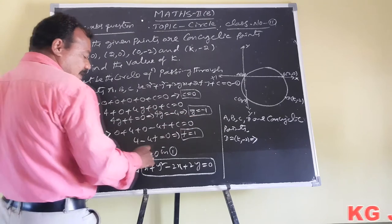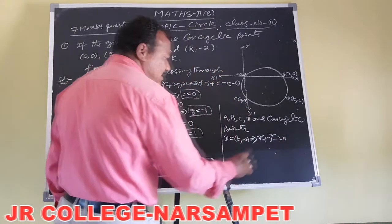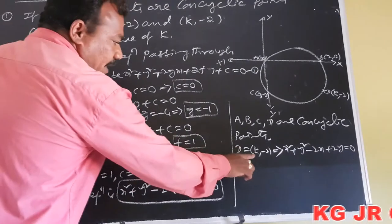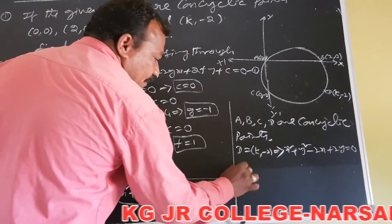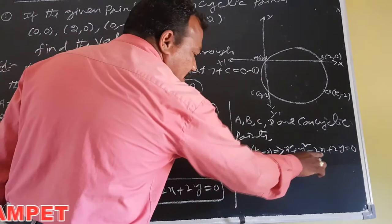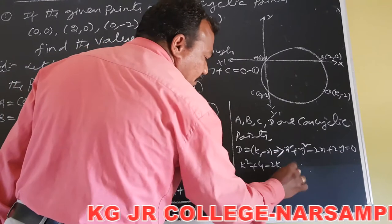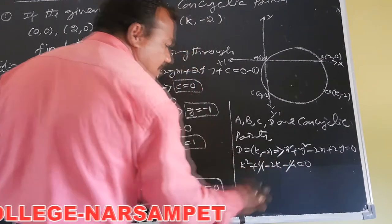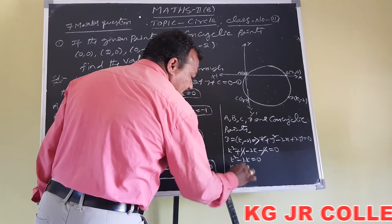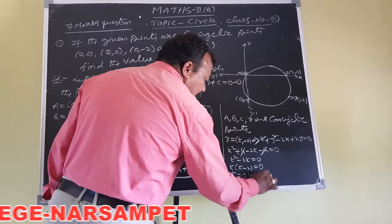Substituting x=k, y=-2 into x² + y² - 2x + 2y = 0: we get k² + 4 - 2k + 2(-2) = 0, which is k² + 4 - 2k - 4 = 0. Both fours cancel, giving k² - 2k = 0, so k(k-2) = 0. Therefore k=0 or k=2.